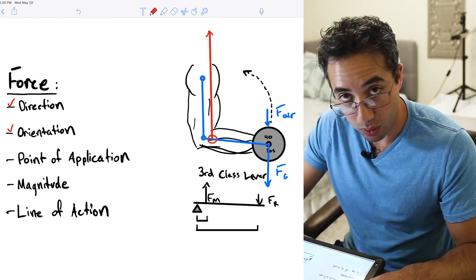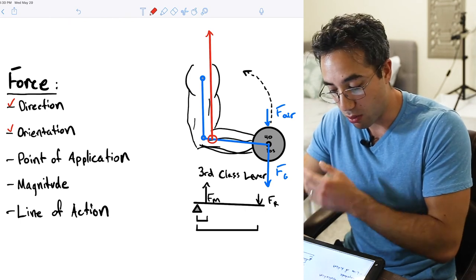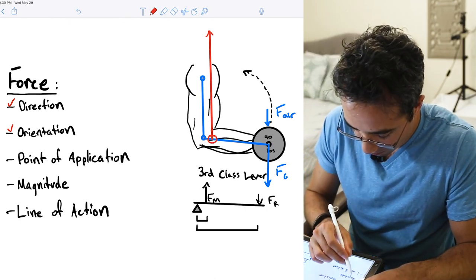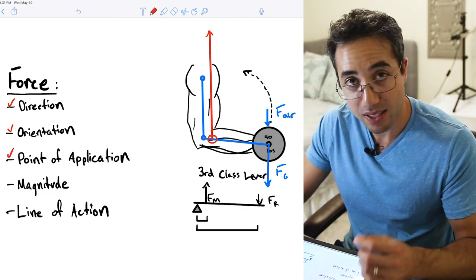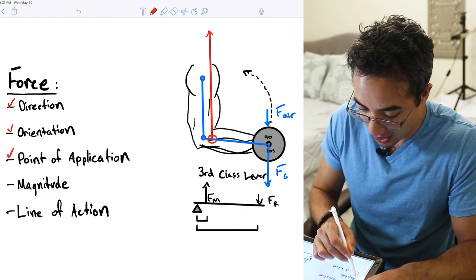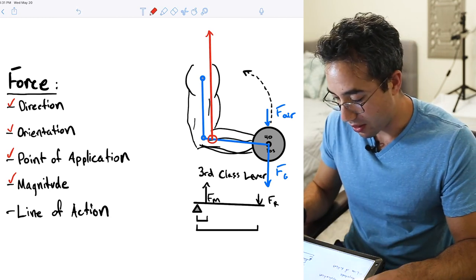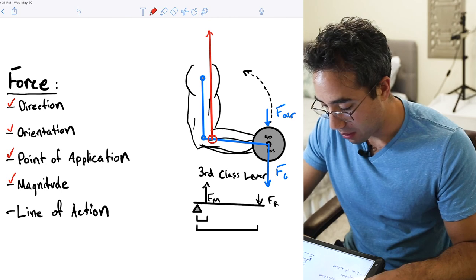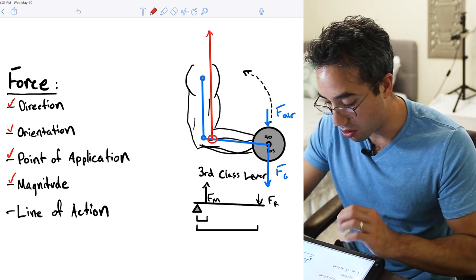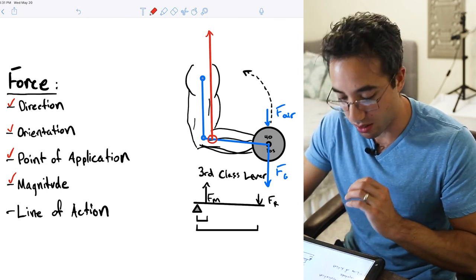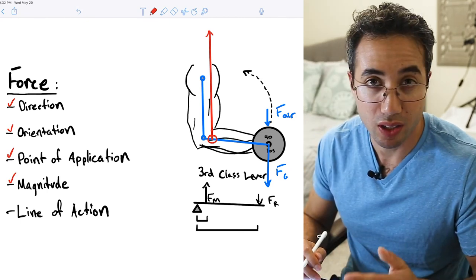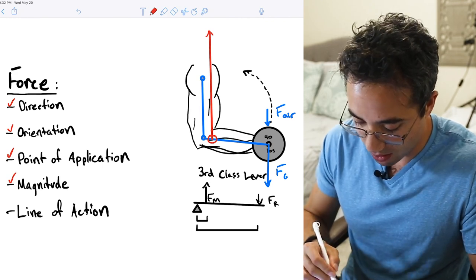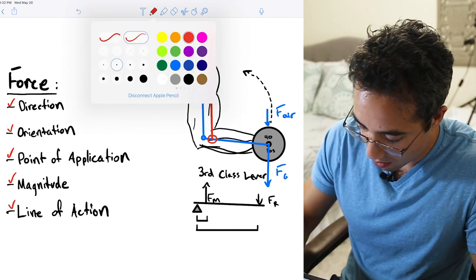The point of application is right here on the forearm on the proximal part of the forearm right where the biceps brachii is inserting and it has a magnitude which in this case is needing to be many times greater than that of the force of gravity on the weight because of the mechanical disadvantage of the biceps brachii due to the third class lever setup. And finally we can draw the line of action which is an imaginary line that extends infinitely through the tip and the tail of this vector.